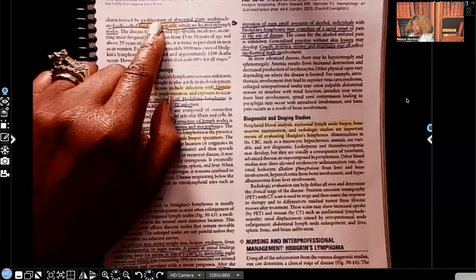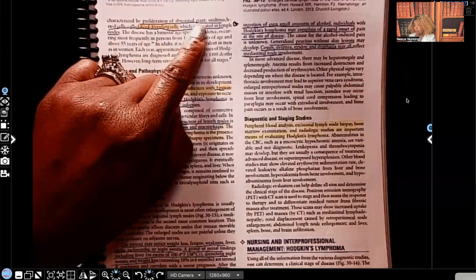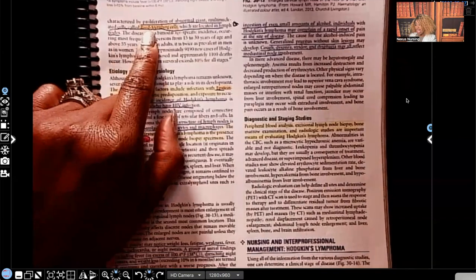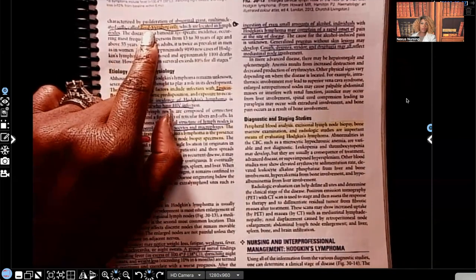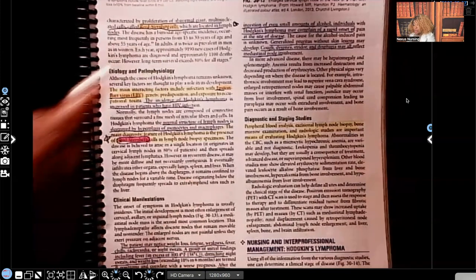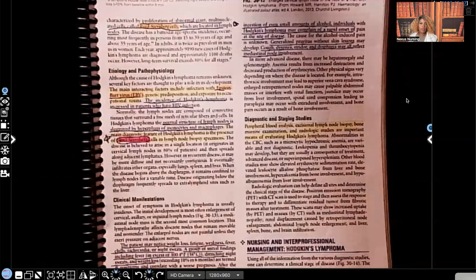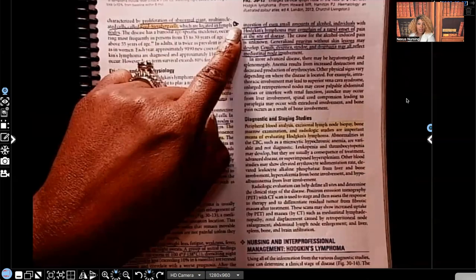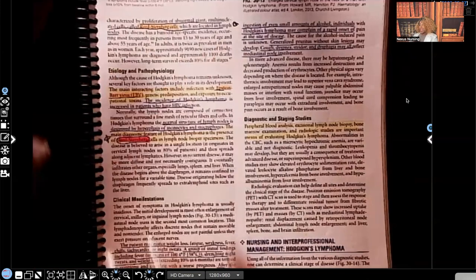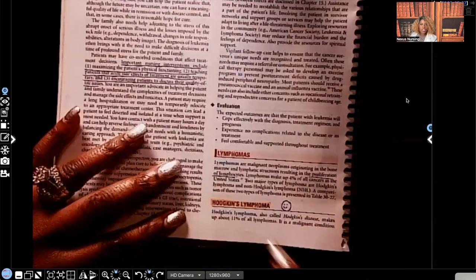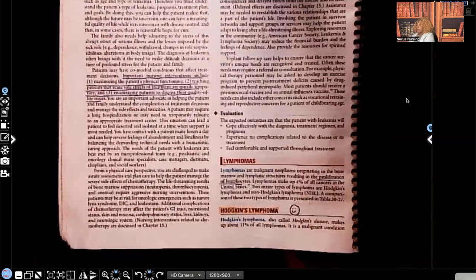It's characterized by proliferation of abnormal giant multinucleated cells. And these are known as Reed-Sternberg cells, and they're located in the lymph nodes. When you see Reed-Sternberg cells, I need you to think of Hodgkin's lymphoma. That's why I put a star next to it. Remember that. Reed-Sternberg cells, that goes with, right here, Hodgkin's lymphoma, which the prognosis is better than non-Hodgkin's. Let's keep going.